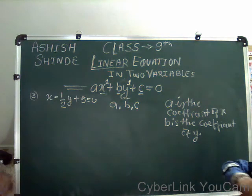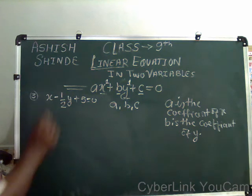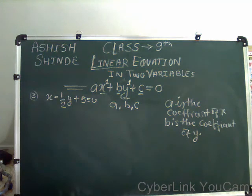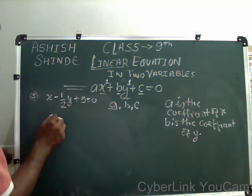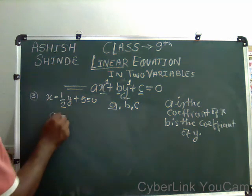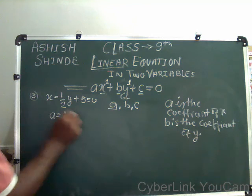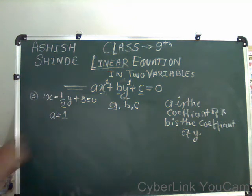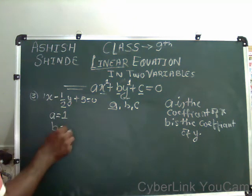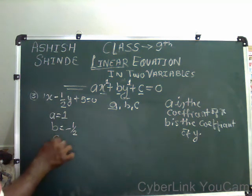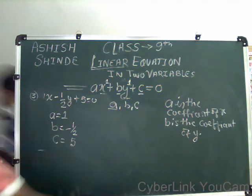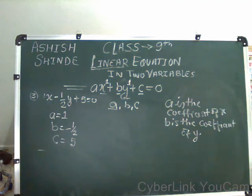Now comparing this equation: x minus (1/2)y plus 5 equals 0 — find the value of A, B, C. Here A is the coefficient of x, so A equals 1. B is the coefficient of y, so B equals minus 1/2. And C is the constant value, so C equals 5. Thank you very much.